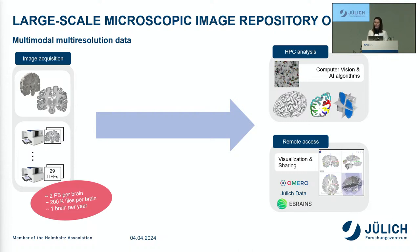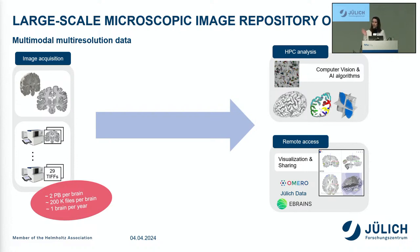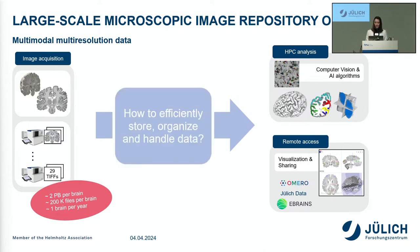What are we doing with this data? On one hand, we are analyzing it with HPC algorithms — computer vision and AI — to extract information such as cell densities or brain regions. But we also want to make it accessible remotely for visualization, and to share it with others through platforms like OMERO, Julich Data, eBrains, and others. The question is: how do we efficiently organize, store, and handle this kind of data?